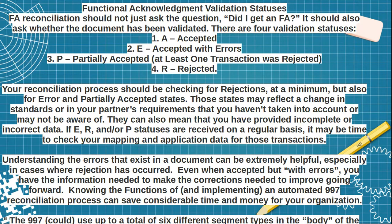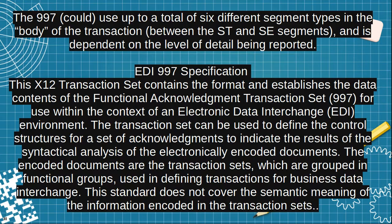If E, R, or P statuses are received on a regular basis, it may be time to check your mapping and application data for those transactions. Understanding the errors in a document can be extremely helpful, especially when a rejection has occurred. Even when accepted with errors, you have the information needed to make corrections going forward. Knowing the functions of and implementing an automated 997 reconciliation process can save considerable time and money for your organization.